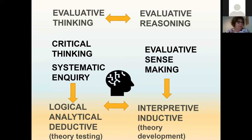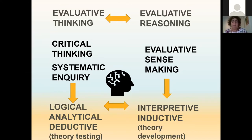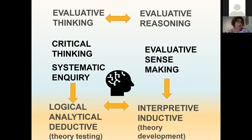Evaluative thinking is critical thinking — systematic inquiry, analytical and deductive. It's called theory testing. We have a theory, we collect the information, we test the theory, and we deduce a conclusion. It's called top-down theory. Evaluative reasoning is bottom-up: it's about sense-making from the data, more interpretive and inductive, and more about theory development.